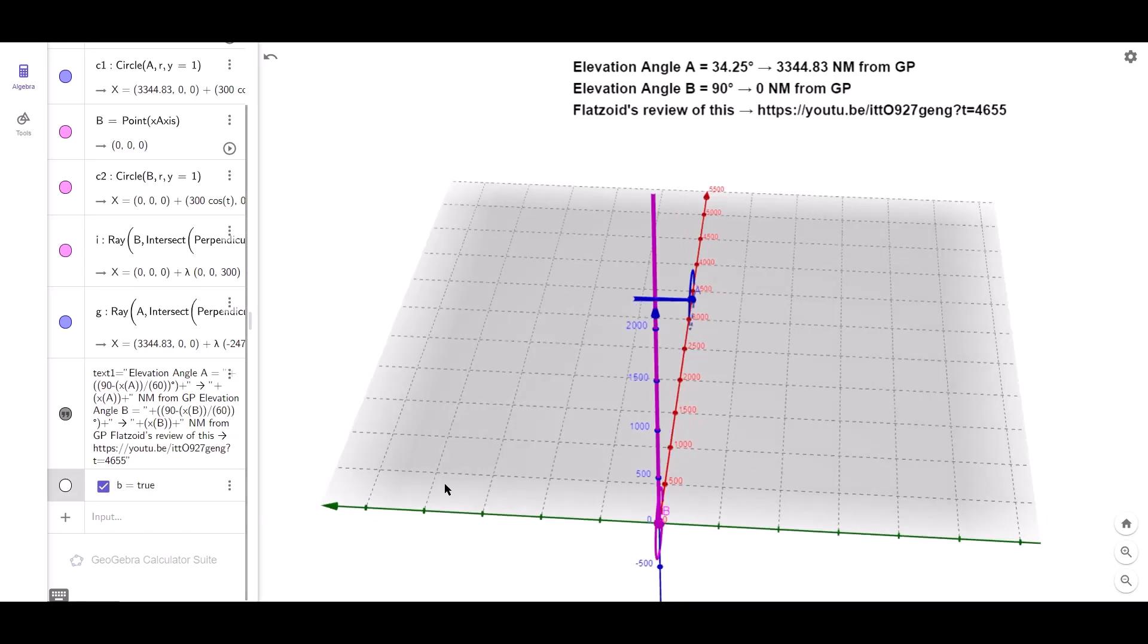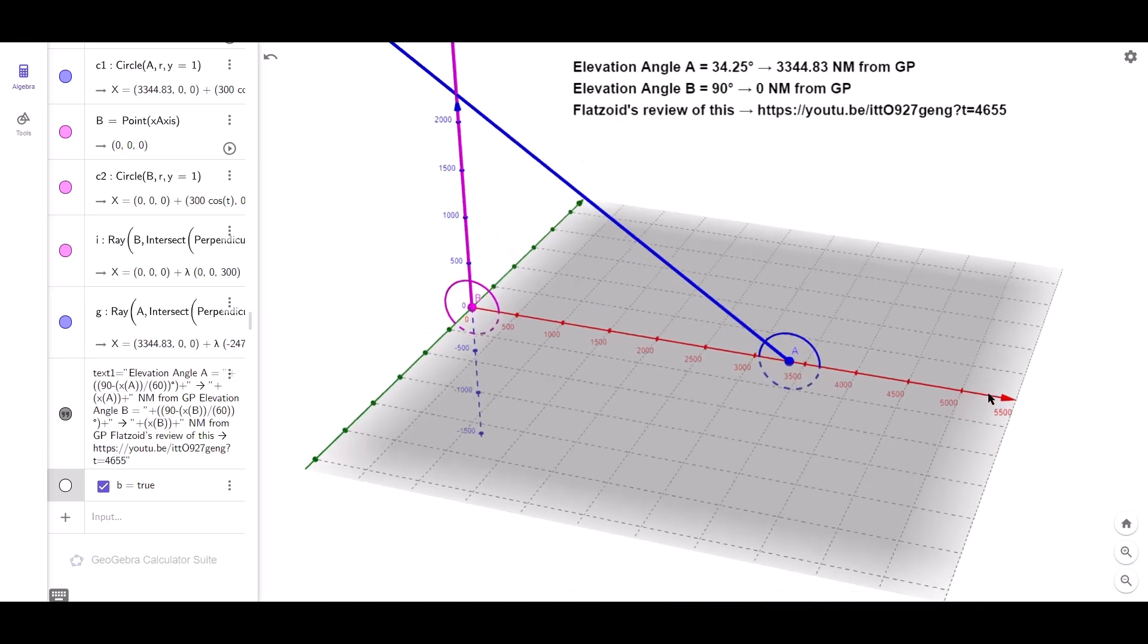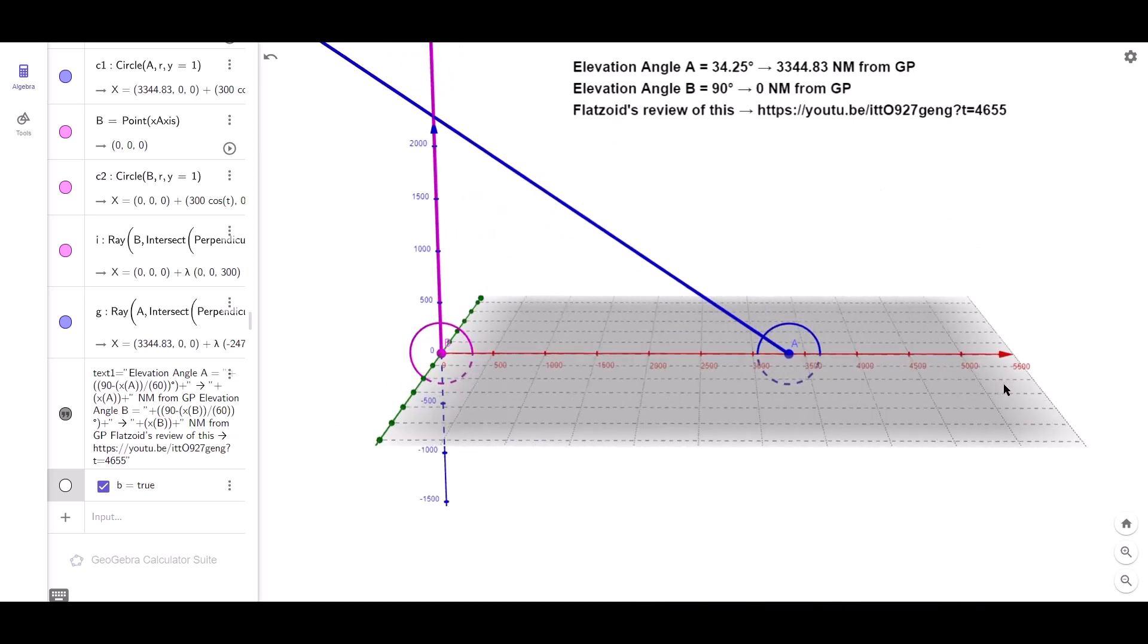But then I introduced Michelle to the picture. Michelle's bubble works in the same way as Mike's, producing the line of sight to Polaris based on her distance from the GP.